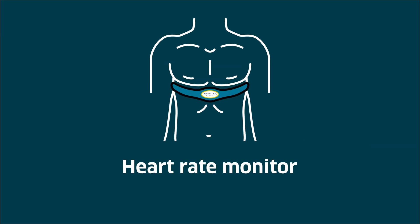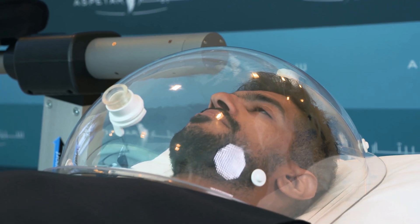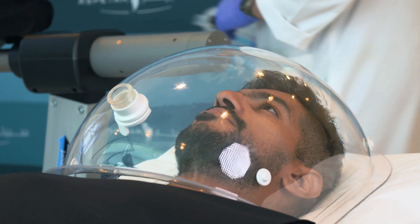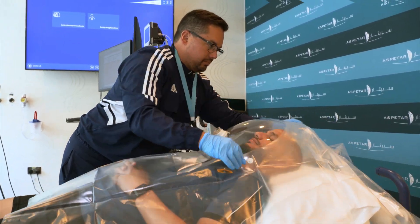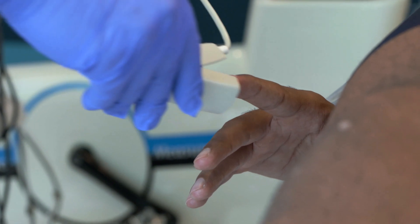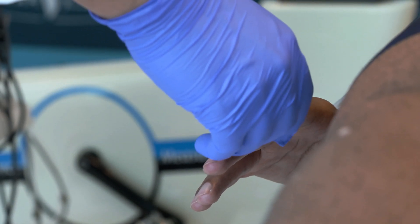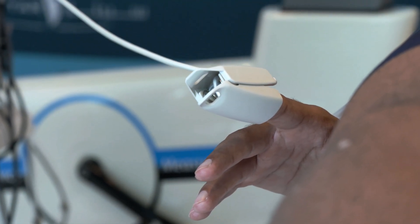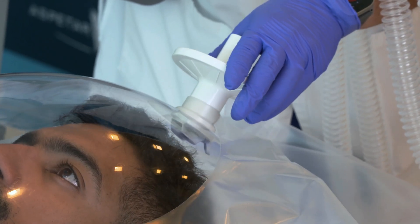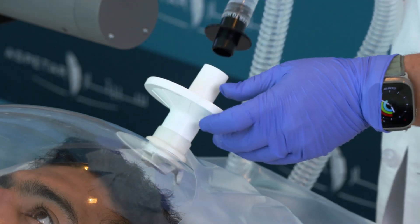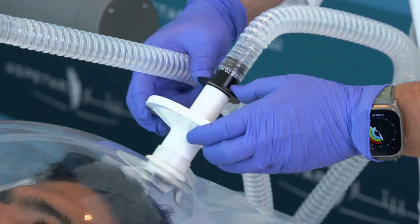During the test, the physiologist will provide a heart rate monitor for you to wear. You will then lay supine on a stretcher while the physiologist covers you with the canopy hood and canopy veil. The physiologist will then connect your finger to a pulse oximeter that you will wear for the duration of the test. Lastly, the physiologist will connect a tube from the canopy hood to the metabolic cart.